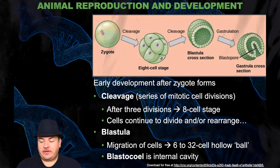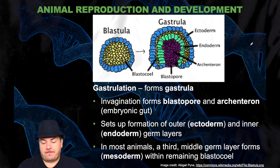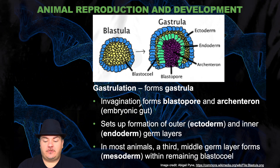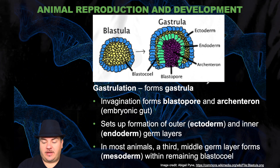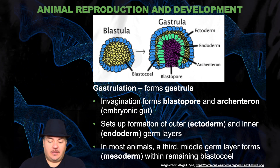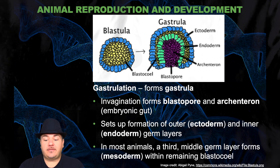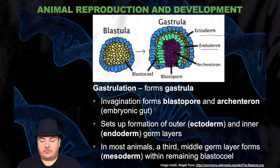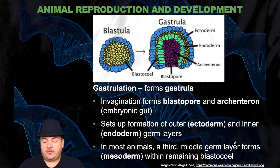Then you have gastrulation, which is where these cells start to invaginate or fold in to form the gastrula. This is a cross section, so you can see what it should look like inside. Invagination forms the blastopore — that's this first opening here — and the archenteron, which is the embryonic gut. You can see in purple the archenteron and the opening is the blastopore in this early gastrula. It sets up formation of the outer ectoderm and inner endoderm germ layers. In most animals, a third inner layer of germ cells forms called the mesoderm.